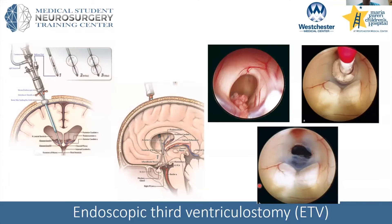For patients with obstructive hydrocephalus — for example where the aqueduct is very narrowed — you can do a procedure where you leave no hardware. A lot of this grew out of experience in Africa, where neurosurgeons would volunteer for about a month and place many shunts. But shunts are not perfect systems — they're made of plastic, they can fracture, break, or pull out. When these neurosurgeons left the country, these kids didn't have treatment to deal with those complications. So this procedure was developed to treat hydrocephalus without leaving any hardware behind.